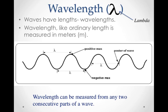The next wave part is wavelength. It's given the Greek letter lambda for a symbol. And wavelengths, like ordinary length, is measured in meters. And a wavelength is the distance between consecutive parts of a wave. So if we go from a crest to the crest, those are consecutive crests, then that would be the wavelength. Or from trough to trough, that would be consecutive parts, and that would be a wavelength. And these would be the same amount. Or we can go from midpoint to midpoint, and that would be the wavelength.